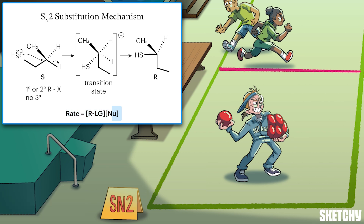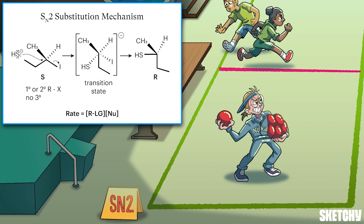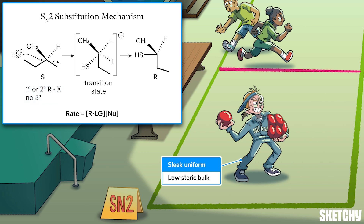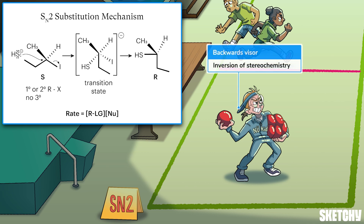This guy is wearing a 'new kid' shirt because he symbolizes the nucleophile in an SN2 reaction, and he's quite good at dodgeball — because an SN2 reaction needs a good nucleophile to work. His svelte uniform reminds you that the SN2 reaction only works if the molecule the nucleophile attacks is lean: primary or secondary carbons only, no tertiary. Steric bulk physically blocks the nucleophile from reaching the reactive sp3 carbon, so overly bulky substrates can't do the SN2, just like bulky clothes might cramp this guy's rapid-fire dodgeball game.